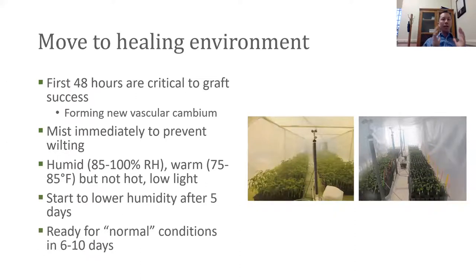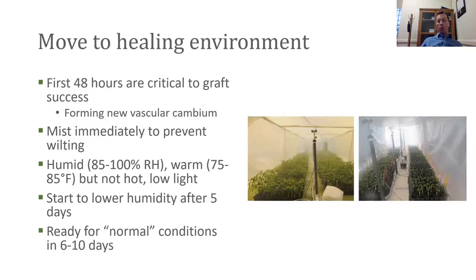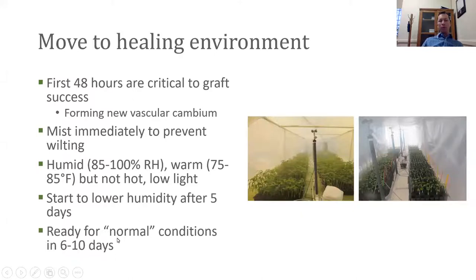Now we need a healing environment — we've just done plant surgery, and we have two plant tissues stuck together but not yet joined. During the healing process, we're forming new vascular cambium and getting the wound to heal between the two plants to make a proper connection. The first 48 hours are critical to graft success. We don't want the plants to wilt — it's helpful to mist those plants as you're grafting to keep them from wilting excessively. A healing environment is simply one that is humid — about 85 to 100% relative humidity — warm at 75 to 85 degrees, and with low light. After about five days we begin to lower the humidity, and in about six to ten days we're ready for normal conditions.